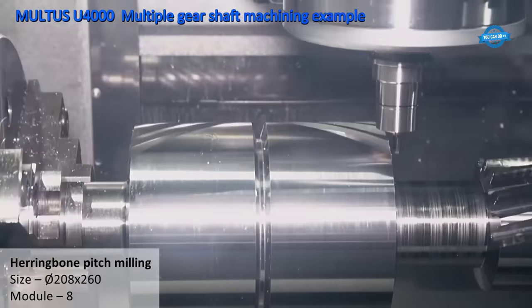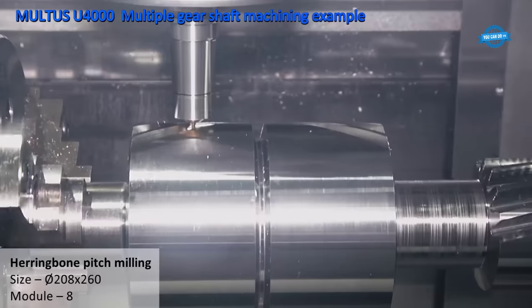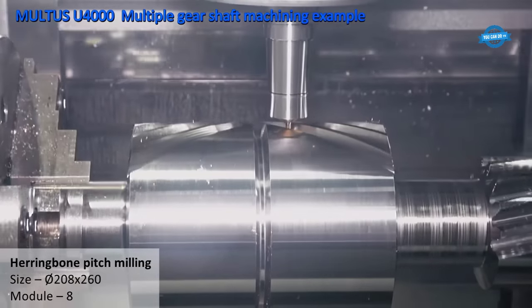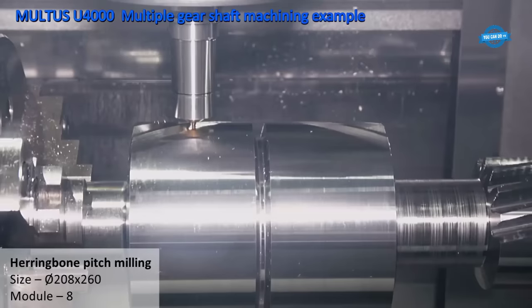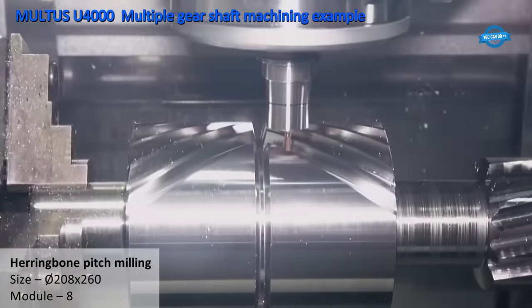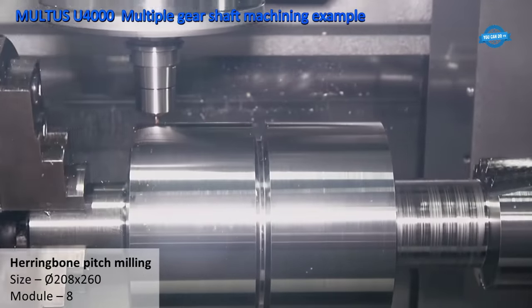The Akuma Maltus U-4000 is user-friendly and features the OSP-P300 control, which combines familiar programming methods from both lathe and machining center disciplines. This streamlined control system ensures a seamless transition for operators and programmers, making it easier to take advantage of the machine's full potential.